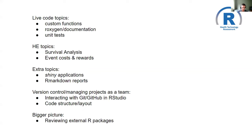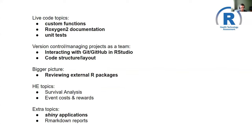There are a couple of requests around survival analysis and adding event costs and rewards into models — those are a bit more topic-specific, so I might avoid those and stick to more generic skills. There were also requests around Shiny and R Markdown. But the one that got the most thumbs up was version control and interacting with GitHub in RStudio and working together as a team — that's what we'll focus on the most.